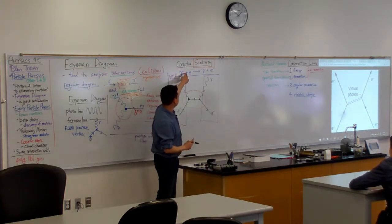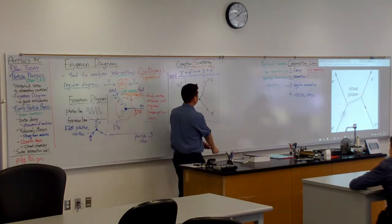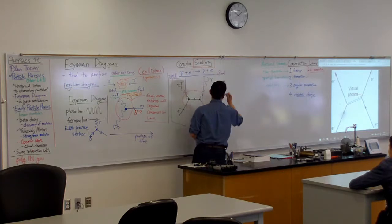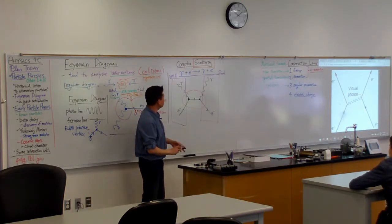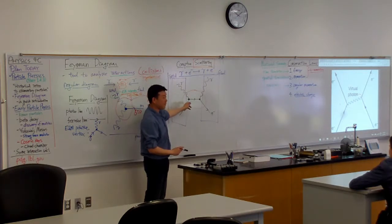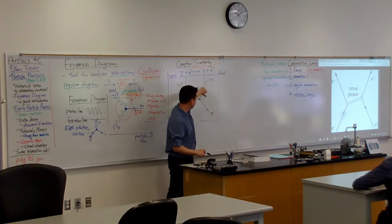And what's in this box, that's also clear enough. That's the final state. So initially you see a photon coming in, electron coming in. And finally you see a photon going out and electron going out.